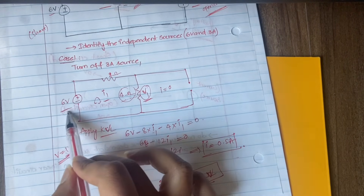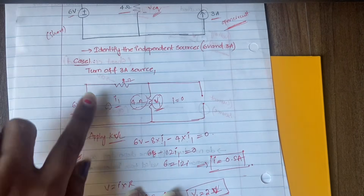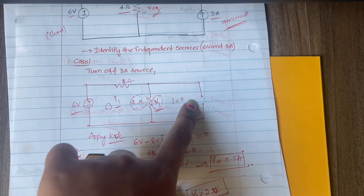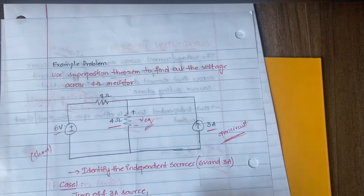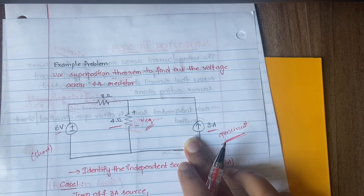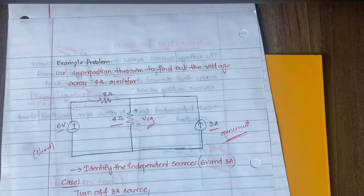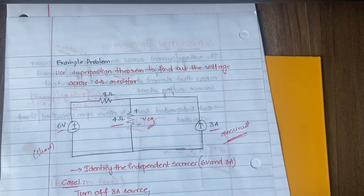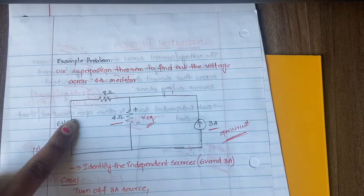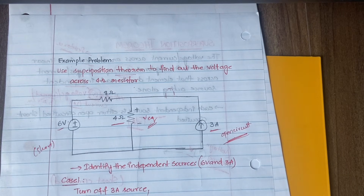In the same way, we now short circuit the six volt voltage source and consider only the three ampere current source, and we find V2. Then we add V1 and V2 to get the total voltage. If the circuit had three independent sources, you would do three cases — turning off each one at a time — find the voltage in each case, and add all of them. However many independent sources there are, you turn off all of them one by one and find the voltage in each case, then add all the voltages.